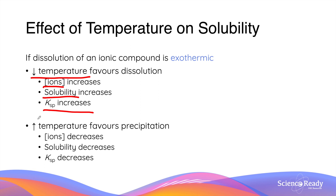Vice versa, if you increase the temperature for an exothermic reaction, the ion concentrations and the solubility will both decrease, and the Ksp also decreases. So at a higher temperature, precipitation is favoured for an exothermic reaction.